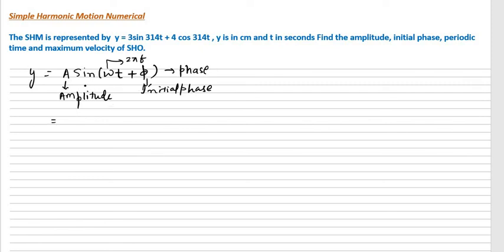If I open up the bracket because I know what is sin a plus b, this is a and this is b. Sin a plus b equals sin a cos b plus cos a sin b. So it is sin omega t cos phi plus sin phi cos omega t.